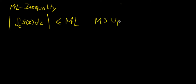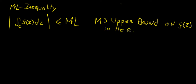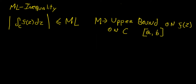M is the upper bound on the function f(z) on the curve C. C is going to be defined between any two points A and B, which are complex numbers. M is a value that is greater than or equal to the maximum value of |f(z)| along that curve. So the magnitude of f(z) is going to be less than or equal to M.